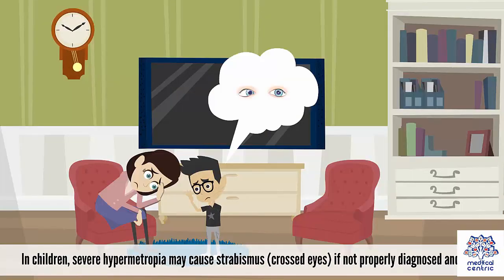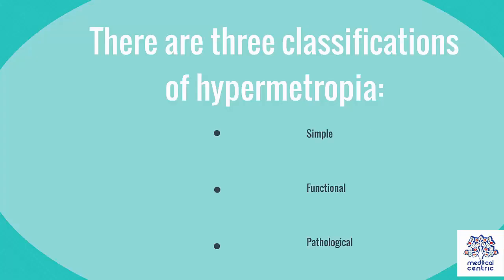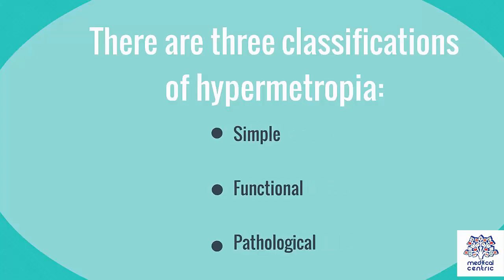In children, severe hypermetropia may cause strabismus, or crossed eyes, if not properly diagnosed and treated. There are three classifications of hypermetropia: simple, functional, and pathological.